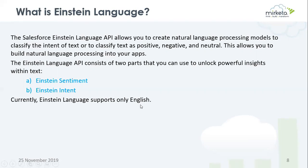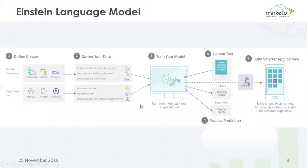Here is the Einstein Language model. We define our classes as intent, which is customizable, and sentiment, which is fixed. In intent we have three classes: shipping, billing, and product. In sentiment, which is fixed, the classes are positive, neutral, and negative.